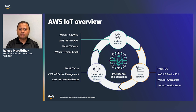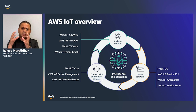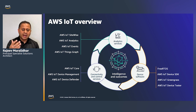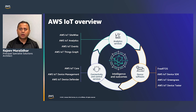AWS IoT capabilities can be bucketed into three areas. First is device software — FreeRTOS for tiny microcontrollers and Greengrass for gateway systems. Second is control and connectivity — AWS IoT Core is the entry point for all device data and signals. A message broker there can enhance messages, enact rules, store data, move it to a database, a dashboard, or into SageMaker for machine learning. We'll focus more on FreeRTOS as the key capability in this talk.